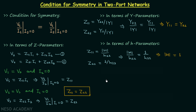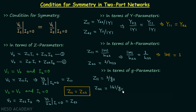Now let us find the condition for symmetry in terms of G parameters. We know Z11 = 1 over G11, and Z22 equals the determinant of the G parameters matrix divided by G11. Setting Z11 = Z22, we get 1 over G11 = determinant divided by G11. Therefore, the determinant of the G parameters matrix must equal 1, and when this holds the two-port network is symmetrical.